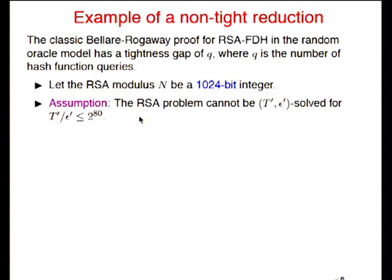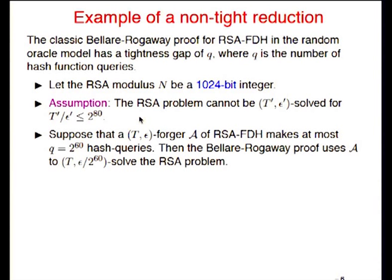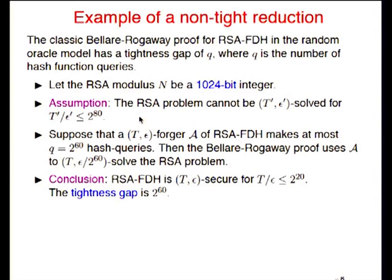For concreteness, suppose N is an RSA modulus of 1,024 bits. If a forger T,ε-breaks RSA Full-Domain Hash and makes at most 2^60 hash queries, then the Bellare-Rogaway proof uses this algorithm to (T, ε/2^60)-solve the RSA problem. The conclusion: RSA Full-Domain Hash is T,ε-secure for T/ε at most 2^20. There's a tightness gap of 2^60. If you use a 1,000-bit RSA modulus, the assurance from the proof is a lot less than you'd like in practice — a million is not a very large security assurance. To get assurance of 2^80, you'd need to increase N to a 4,000-bit RSA modulus, incurring a significant performance hit.